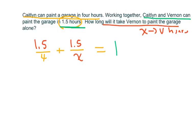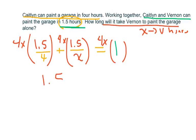My common denominator, my LCD, is 4X. So you're gonna get, when you multiply, 1.5X plus 6, the X's cancel here, equals 4X.